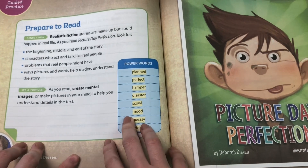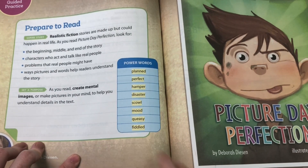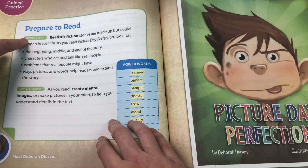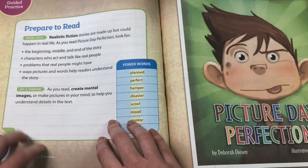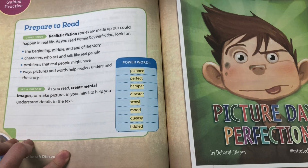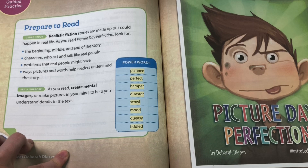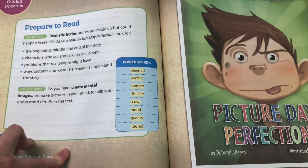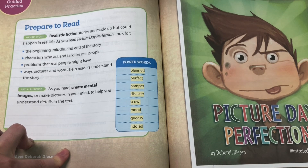Today our story is called Picture Day Perfection. What kind of genre is it? We know it's fiction, but it's a special kind — it is called realistic fiction. Those stories are made up but could happen in real life.